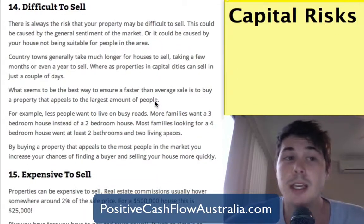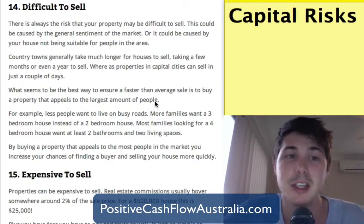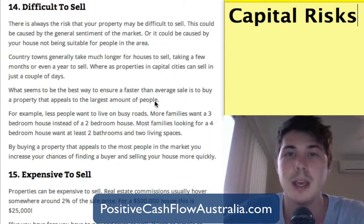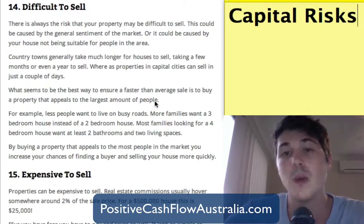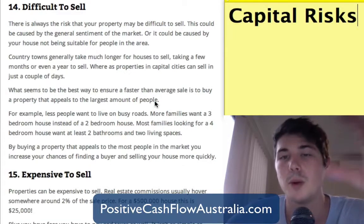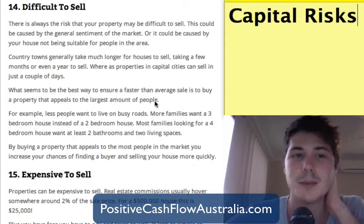Number fourteen is difficulty in selling. There's always the risk that a property may be difficult to sell — in some rural areas it's normal for a property to sit on the market for 200 days or even up to a year. The best way to ensure a faster-than-average sale is to buy a property that appeals to the largest number of people. In our analysis of one town, the majority of people lived in three and four bedroom houses, so a one-bedroom house would have fewer potential buyers.